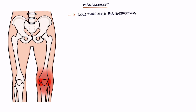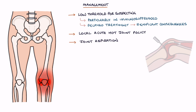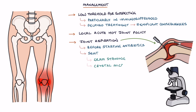Have a low threshold for suspecting septic arthritis, particularly in immunosuppressed patients. Delaying treatment has significant consequences. Joint fluid examination is usually required to exclude septic arthritis. There will be a local acute hot joint policy to guide which team admits the patient — for example, orthopaedics, rheumatology or infectious diseases — and what antibiotics to use and for how long. Joint aspiration is performed before starting antibiotics, and a sample of the fluid is sent for gram staining, crystal microscopy for gout and pseudo-gout, culture and antibiotic sensitivities.